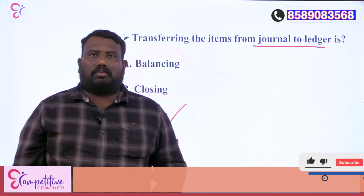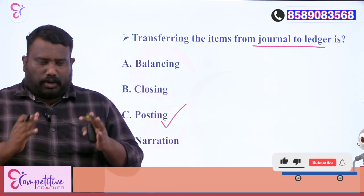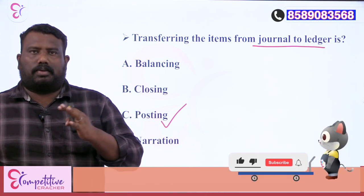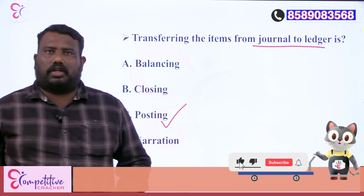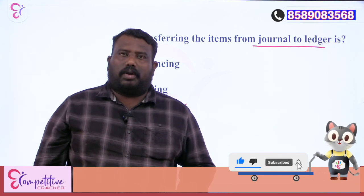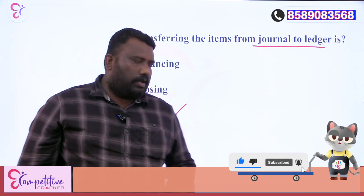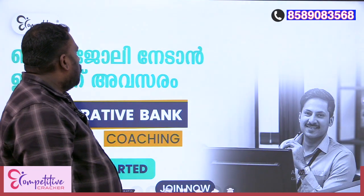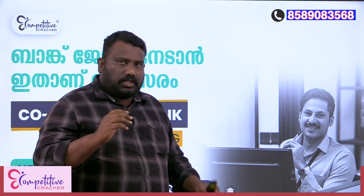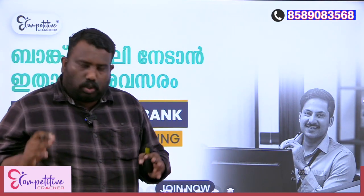The ledger accounts group similar transactions. Posting means we journalize entries and then transfer them into the ledger accounts. The ledger represents classifications — the ledger file and journal file work together. Let's take time to see the ledger.